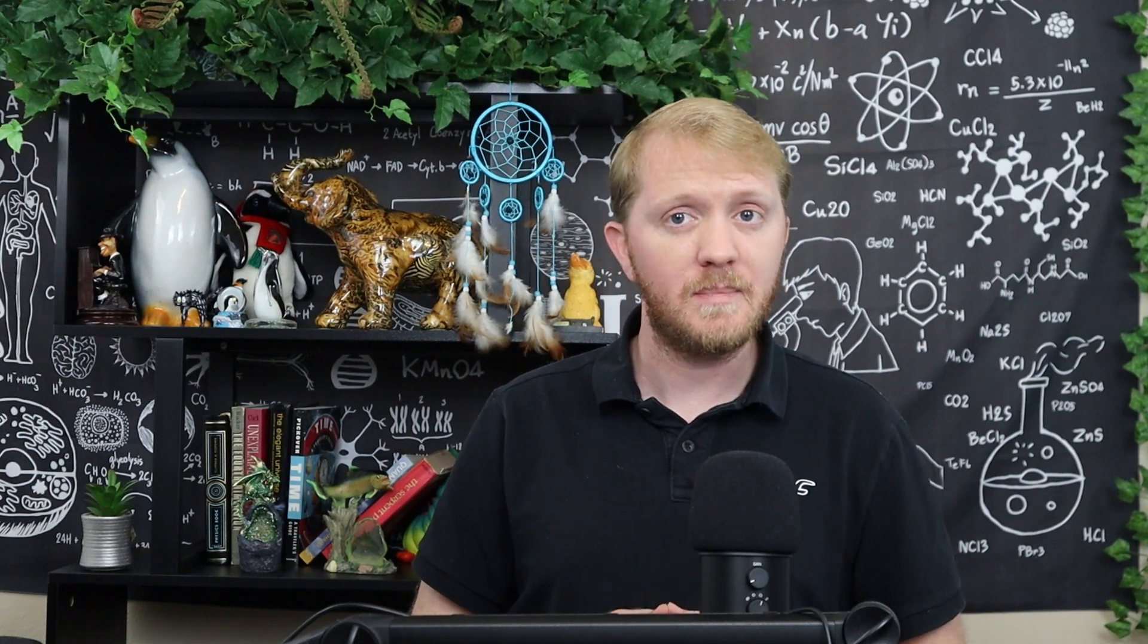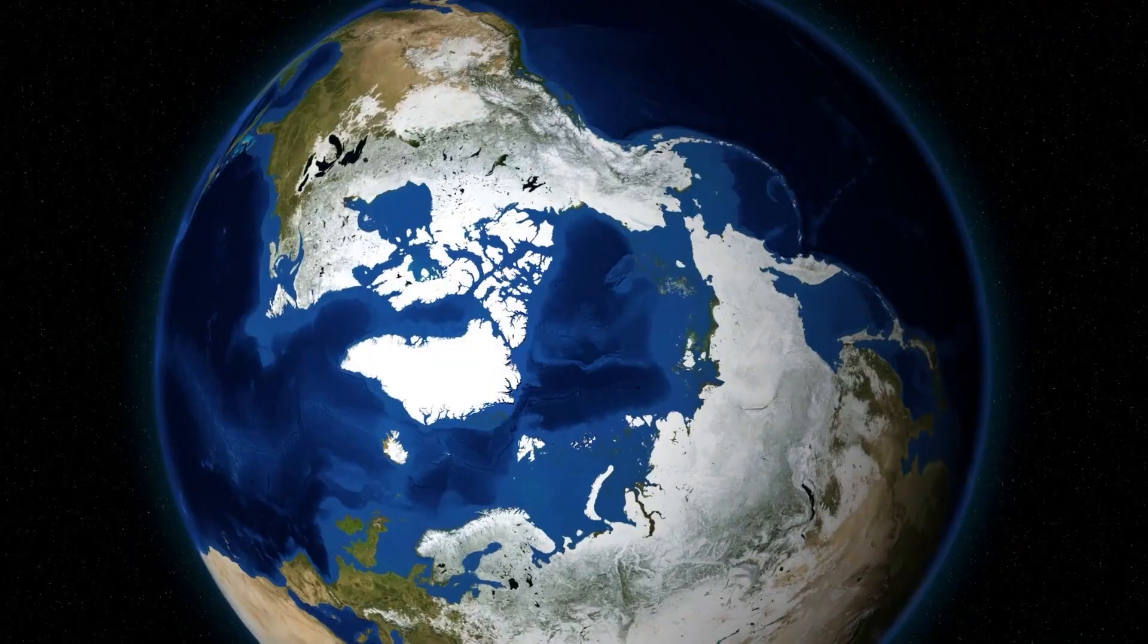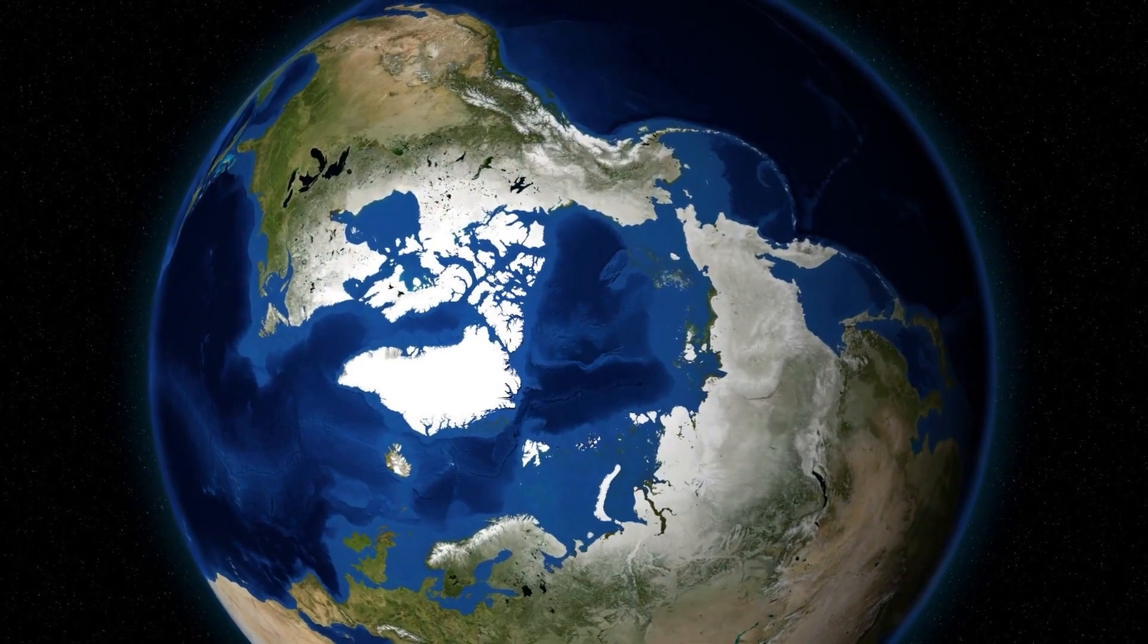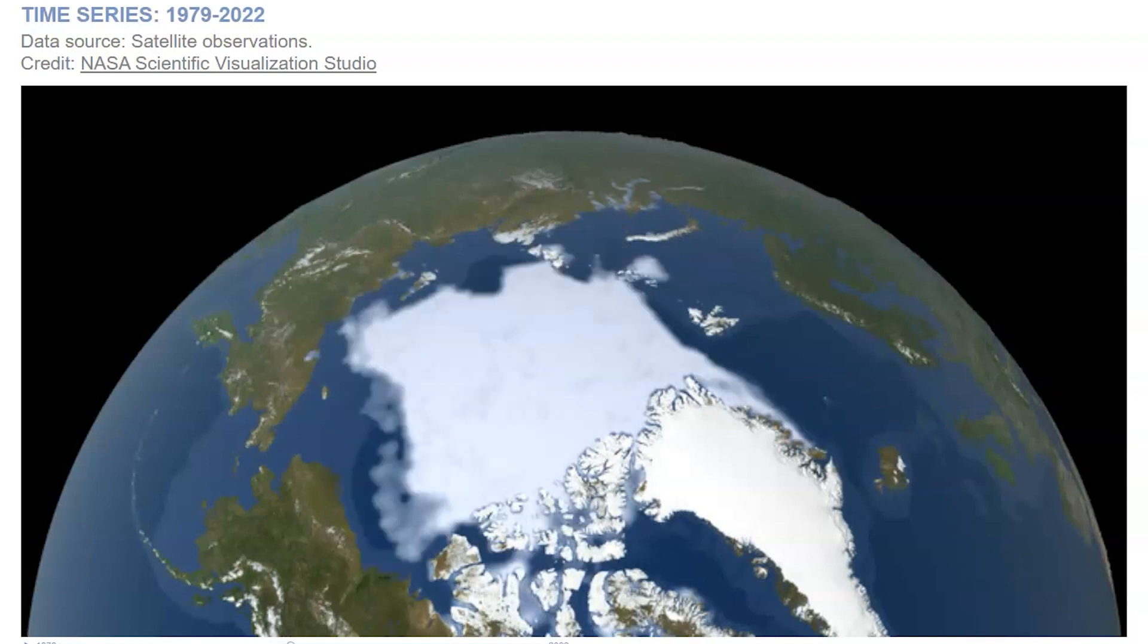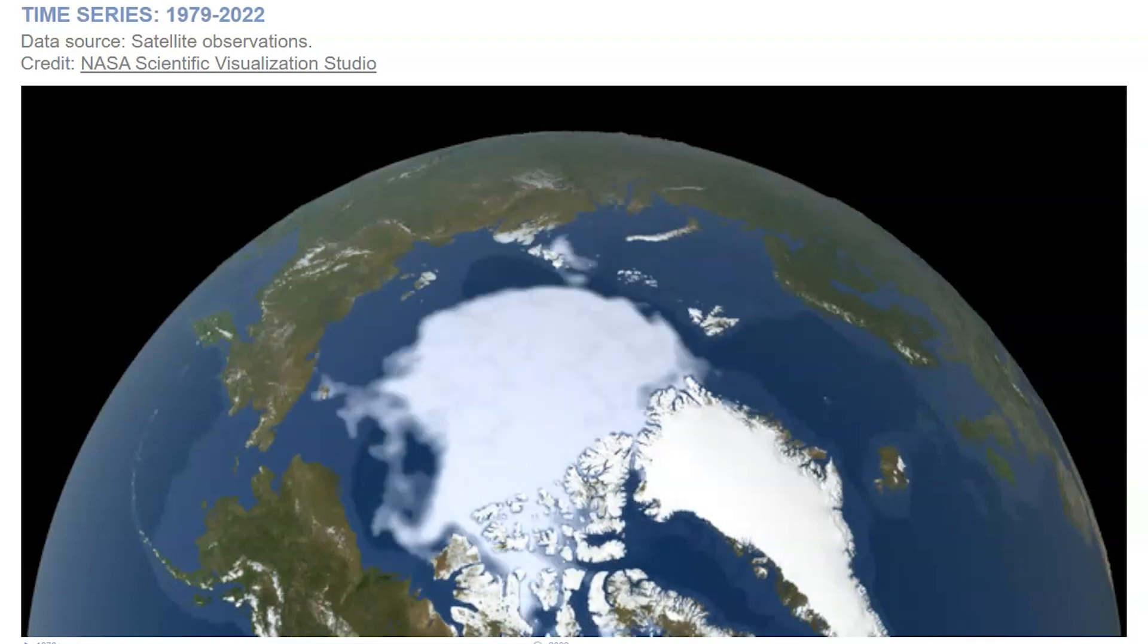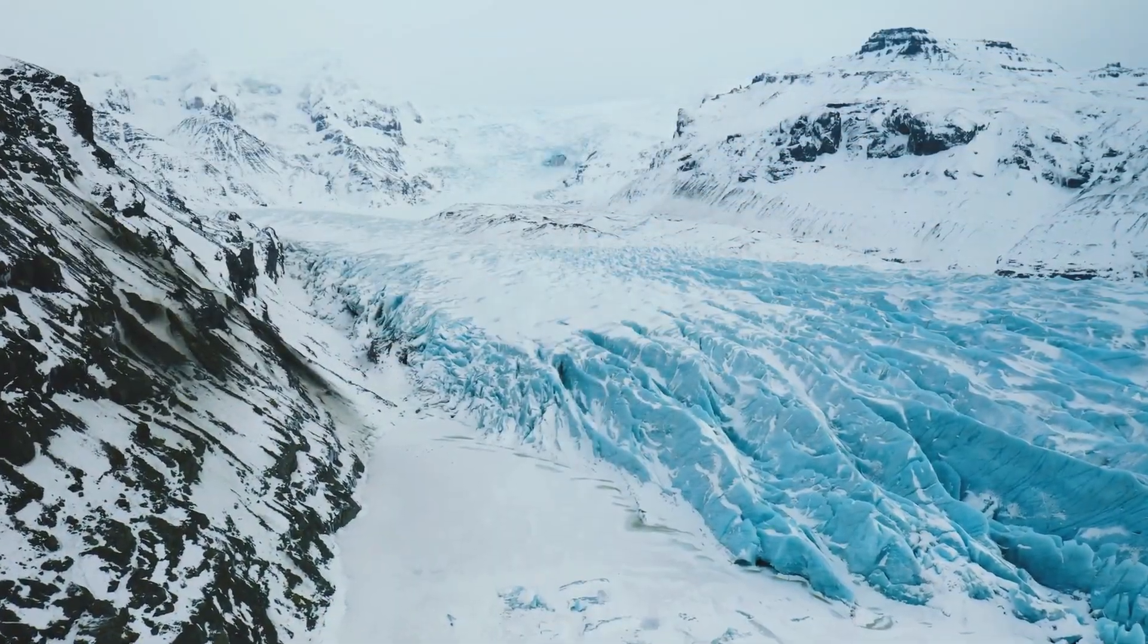Whereas the global warming that's happening now due to human activity is not happening over thousands or millions of years, but over tens of years. Our sea levels are rising rapidly. Glaciers are melting at rates that threaten our planet. The arctic ice has melted to one-third of its size from the last model only 20 years ago. Our oceans are asphyxiated and the greenhouse gases in our atmosphere are dangerously high.